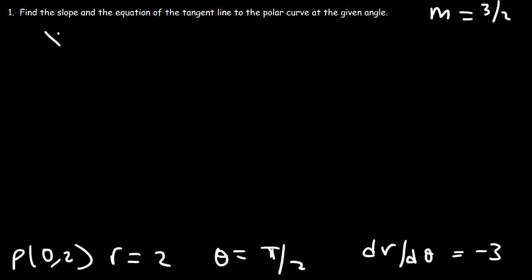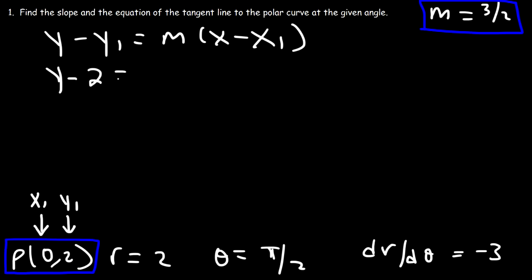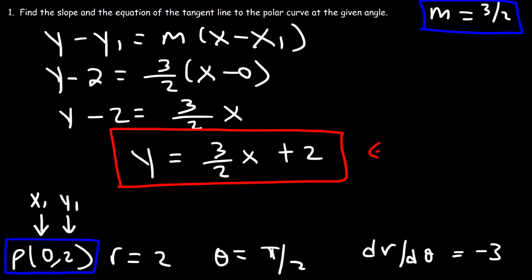Now we can write the equation of the tangent line using our point (0, 2) and slope m = 3/2. Using point-slope form: y − 2 = (3/2)(x − 0). Adding 2 to both sides gives the equation of the tangent line in slope-intercept form: y = (3/2)x + 2.